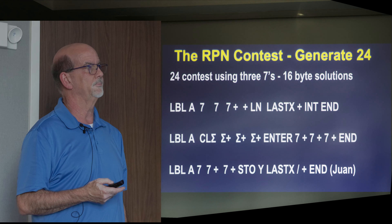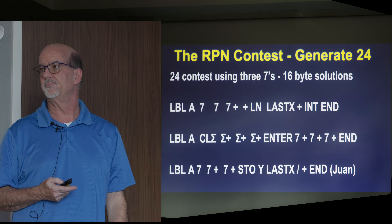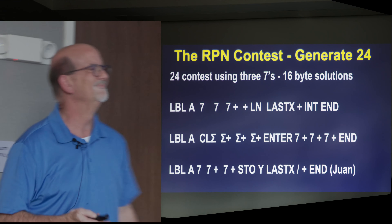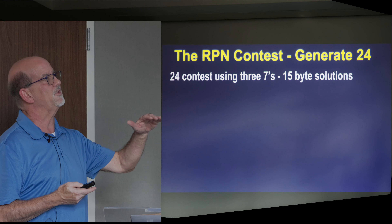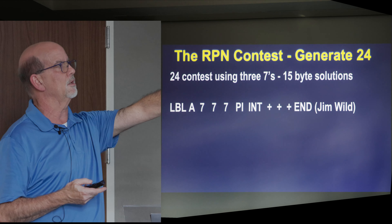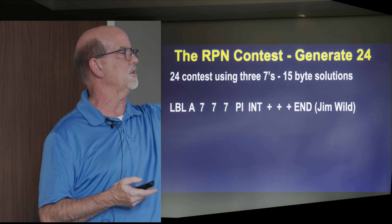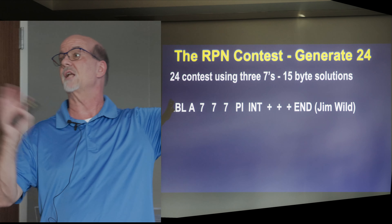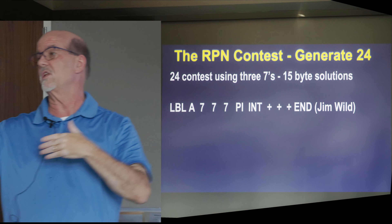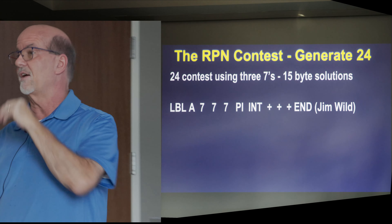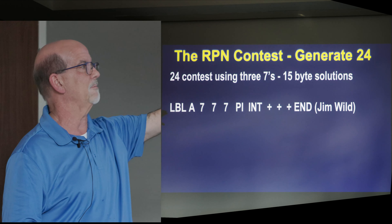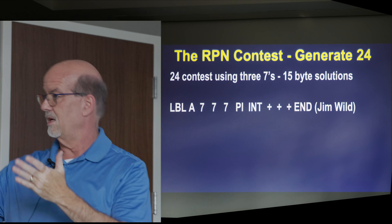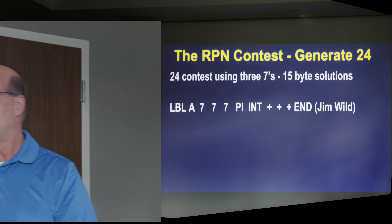A couple more 15-byte solutions. Jim Wilde entered this one: 7 enter, 7 enter, 7, pi — and pi, I was technically going to disqualify anything with pi because that's like a digit, but it turned out not to matter. You could have turned it in, but unless you had an 11-byte solution it was probably not going to work. We could call this the Jim solution, or the third-row solution.